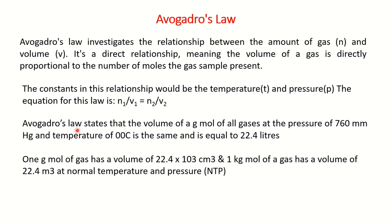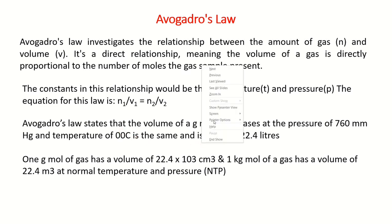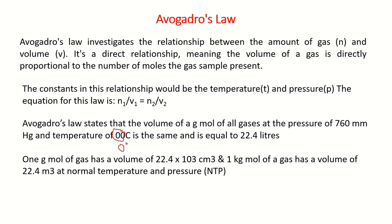The statement of Avogadro's law is: the volume of a gram mole of all gases at a pressure of 760 millimeters of mercury and a temperature of 0°C (273 K) is the same and is equal to 22.4 liters. Please note: this is the pressure value, this is the temperature value, and this is the volume it occupies.